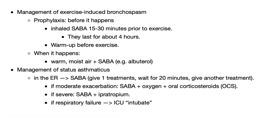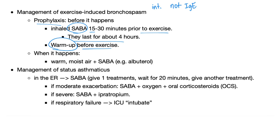Exercise-induced asthma is intrinsic asthma — it is not allergy-related and not related to IgE, so do not give omalizumab. For prophylaxis, take short-acting beta agonists 15 to 30 minutes prior to exercise; they last about two to four hours. Also remember to warm up before exercise. If symptoms occur during exercise, treat with warm moist air plus short-acting beta agonists.